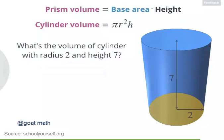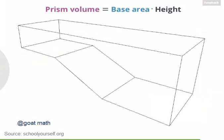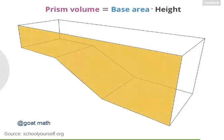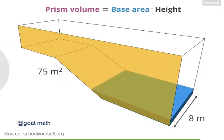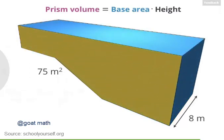Let's try one last problem. Here's an empty swimming pool — the shallow end is over here and the deep end is over here. If you look carefully, this pool is actually a prism. This wall over here is the base of the prism, and it has an area of 75 square meters. The width of the pool is the height of the prism, and this pool is 8 meters wide. So how much water can this swimming pool hold? What's the pool's volume?